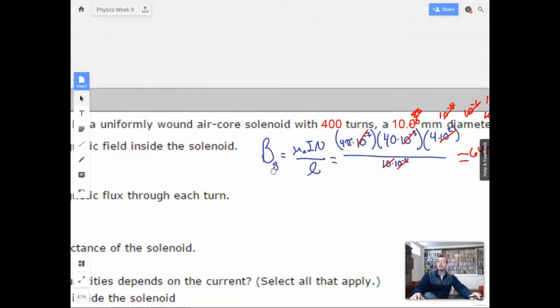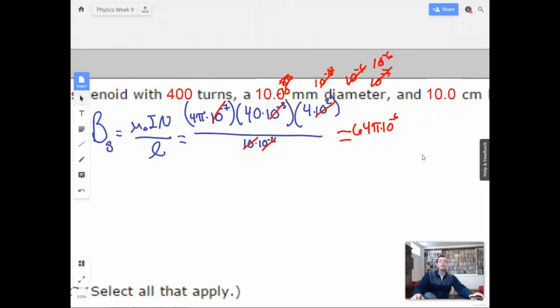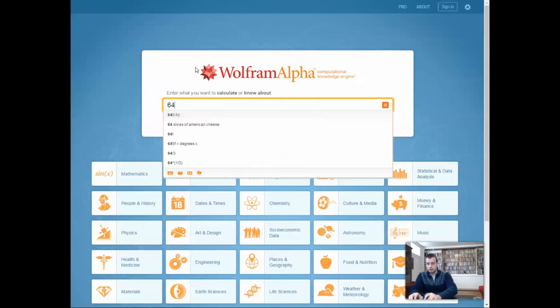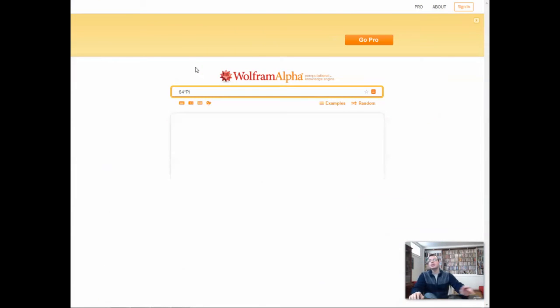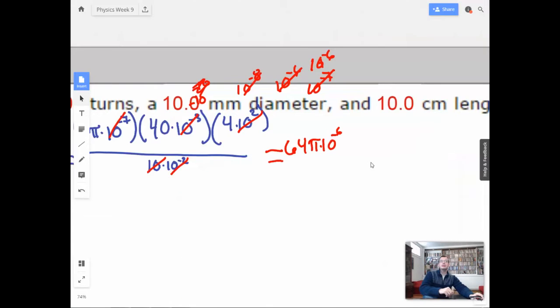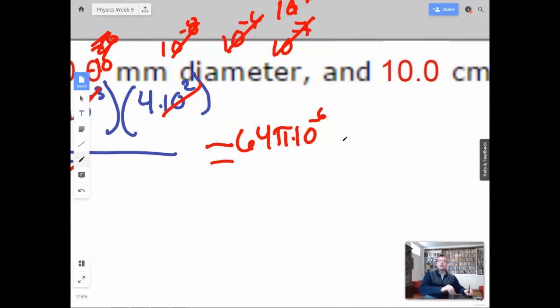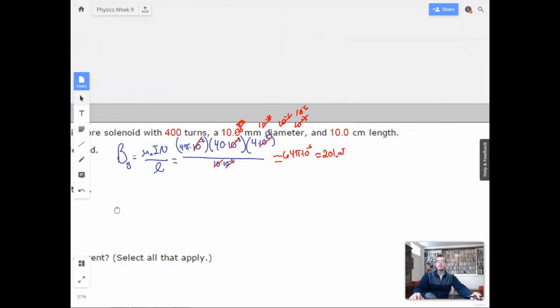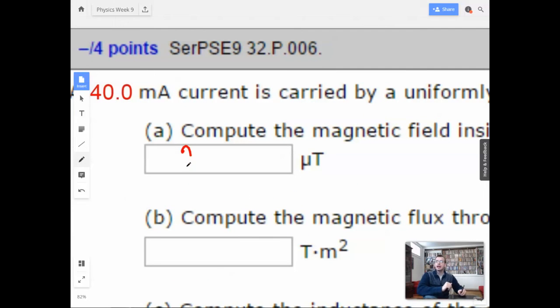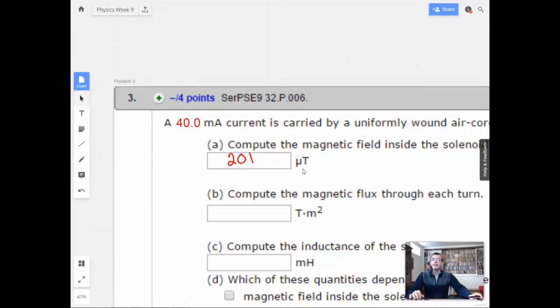They probably want it in micro-Teslas. They do want it in micro-Teslas. So I'm going to go here and do 64 times pi. It's like what, 180? 200. 201. 201 micro-Teslas. Got it. So I'm going to call this guy 201. I should just call it 200.